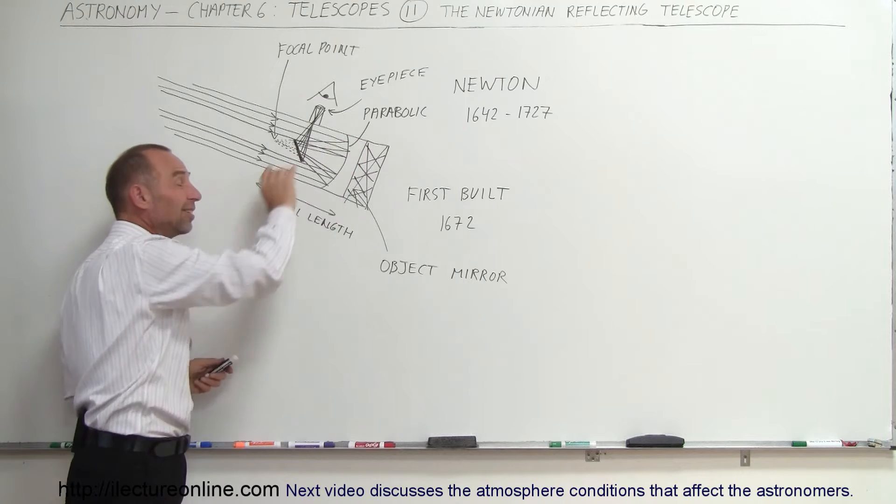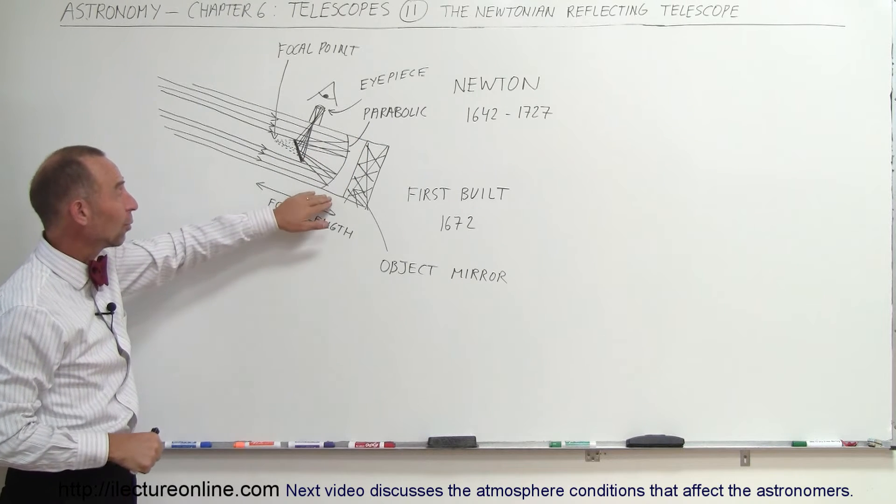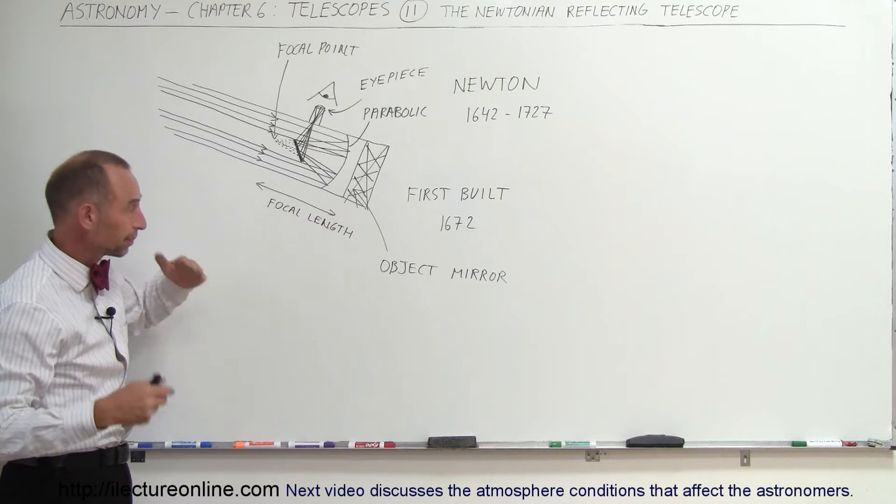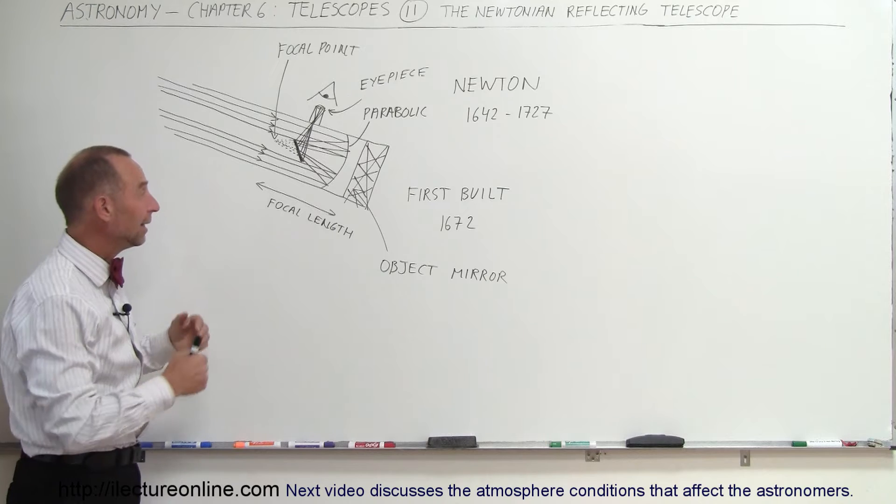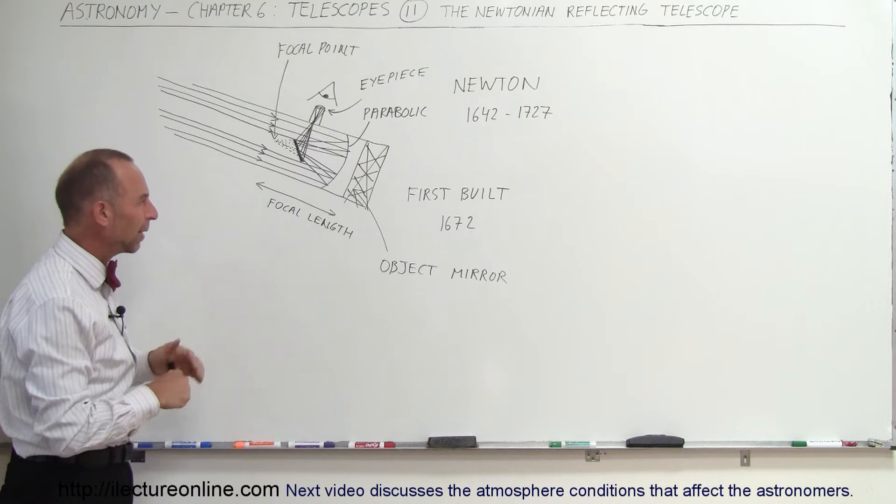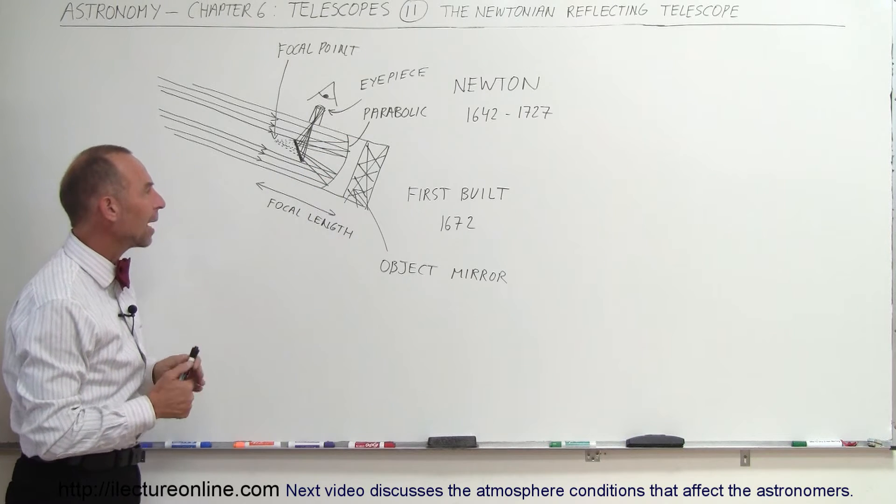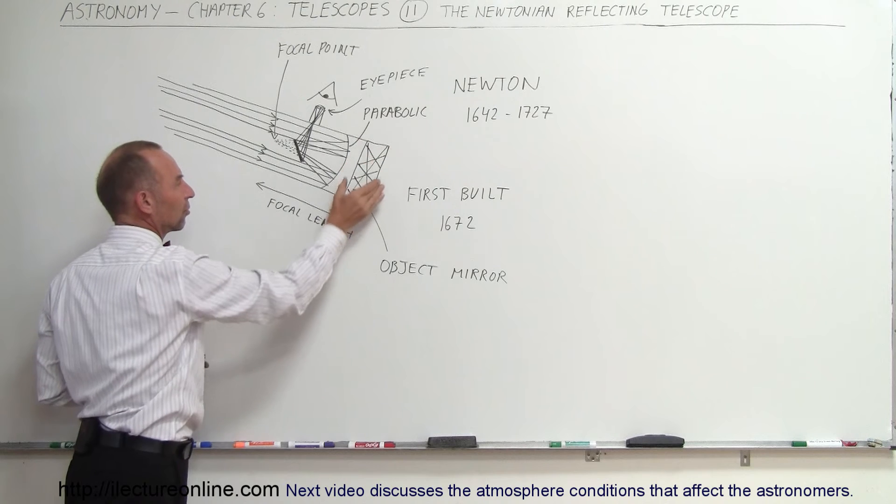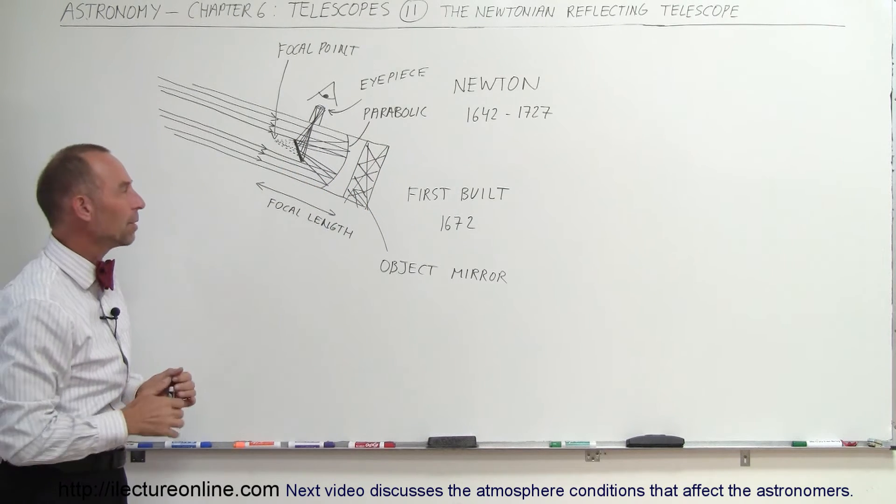And it turns out that using this technology, we've built some very, very large telescopes. The largest one that we built here in the United States was five meters across, the Hale Telescope, and the mirror weighed thousands of pounds, probably several tons of mirror. And nevertheless, that very strong steel structure not getting in the way of the light rays would then be able to support that mirror.